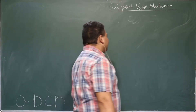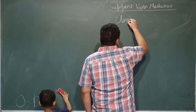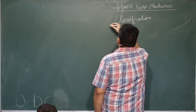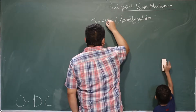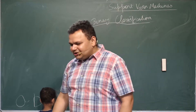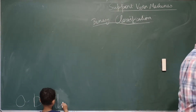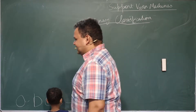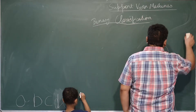Support vector machines are used for classification, primarily binary classification. We have already talked about classification previously, although sort of informally, but we have already discussed a couple of things that we are going to do here.